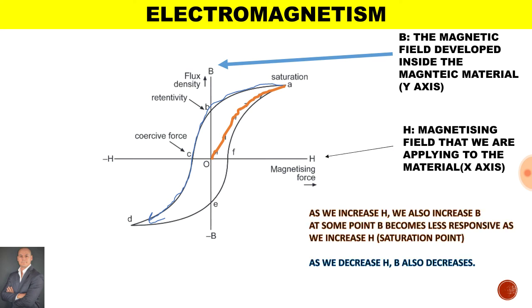Now what we find is that as we increase H, we also increase B. At some point, B becomes less responsive as we increase H, which we reach saturation point. However, if we decrease H, we will also decrease B. And that is represented by the x-axis and the y-axis.